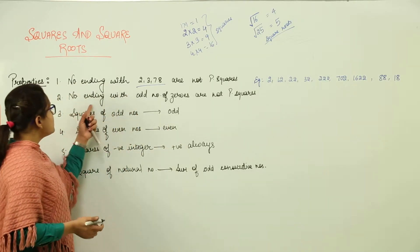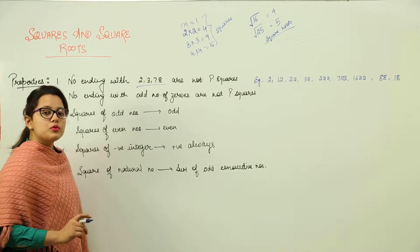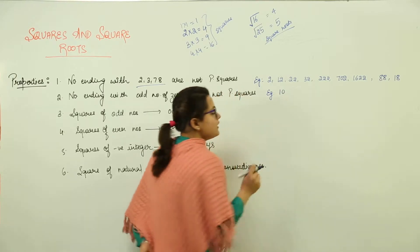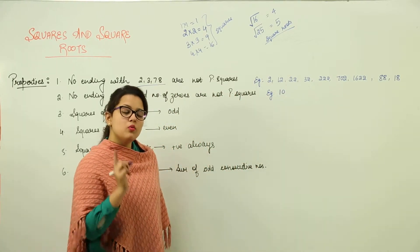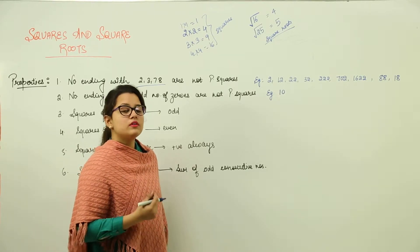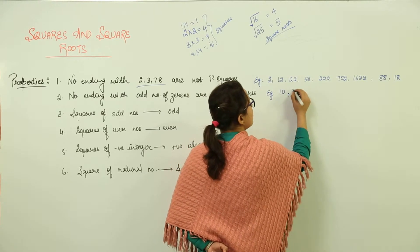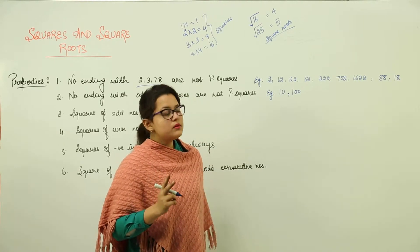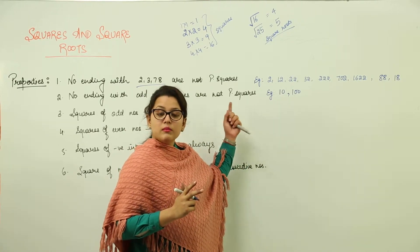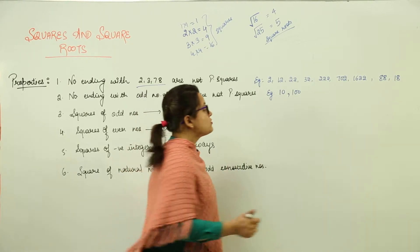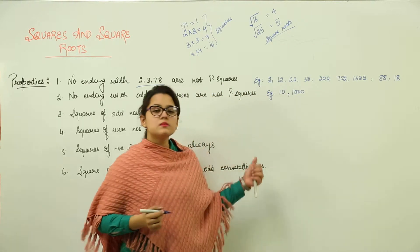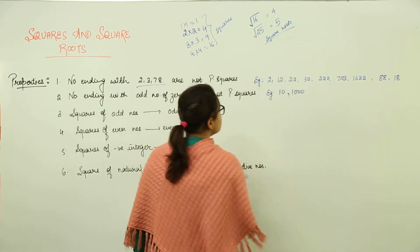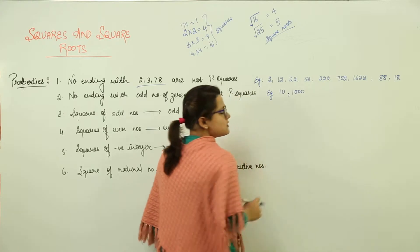The next property says that numbers ending with an odd number of zeros are also not perfect squares. For example, take 10 — it has one zero, and 1 is odd, so 10 is not a perfect square. What about 100? It has two zeros, and 2 is even, so 100 is a perfect square. If we add another zero to make 1000, now there are 3 zeros which is odd, so 1000 is not a perfect square.